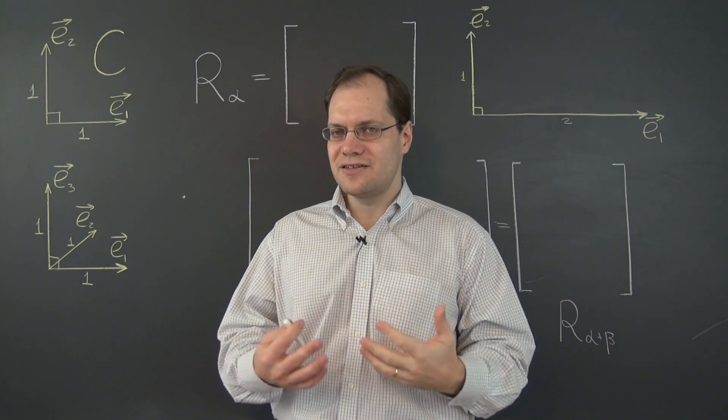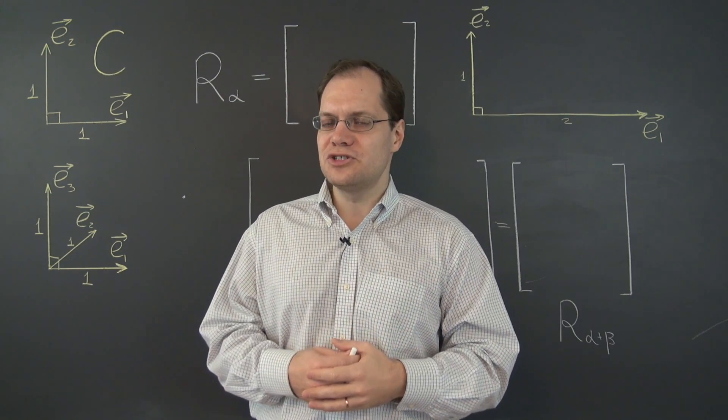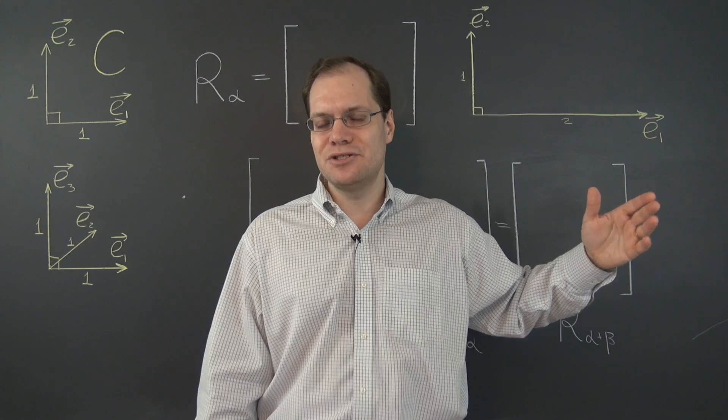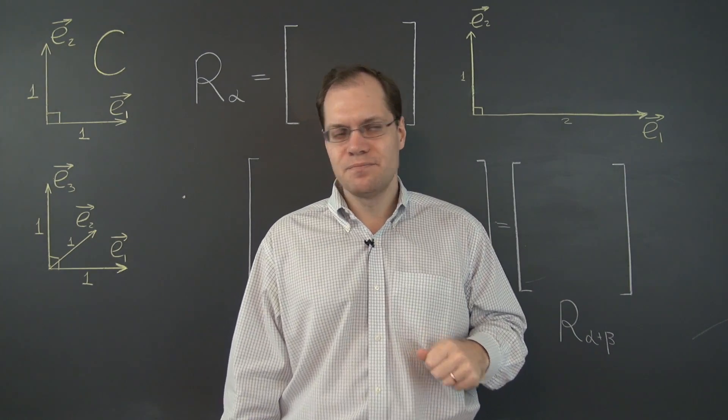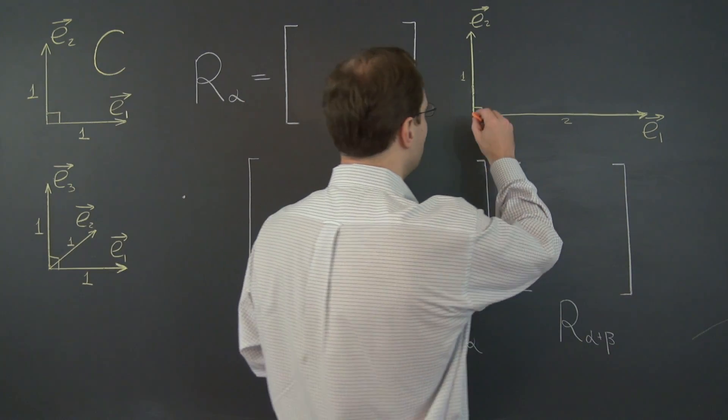The procedure for constructing the matrix is the same as always. We will apply the transformation to each of the basis vectors and represent the images with respect to the basis itself. So let's go ahead and do it. We know exactly how to do it. Use orange chalk.